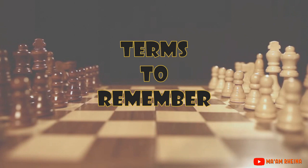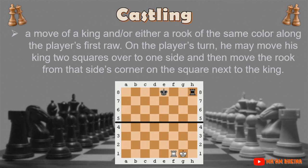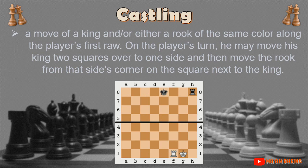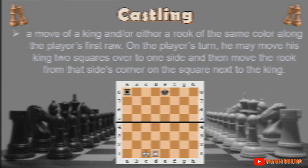Terms to remember: Castling is a move of a king and either rook of the same color along the player's first row. On the player's turn, he may move his king two squares to one side and then move the rook from that side's corner to the square next to the king. Remember that there cannot be any pieces between the rook and the king, and the king should not be in check.